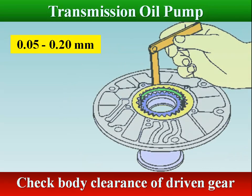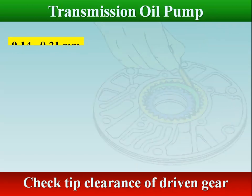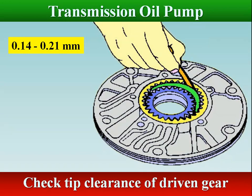Check pump body clearance of the driven gear by pushing the driven gear to one side and measuring the clearance between the gear and the pump body on the opposite side. Check tip clearance of the driven gear by measuring between the driven gear teeth and the crescent-shaped part of the pump body. If the clearances exceed the maximum specification, replace the pump sub-assembly.